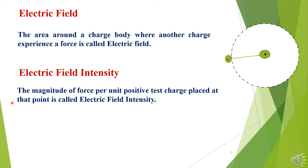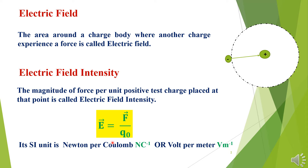Electric field intensity: the magnitude of force per unit positive charge placed at that point is called electric field intensity. For example, a test charge is placed near the field of this positive charge, and this positive charge is applying force on this test charge. The force applied by this positive charge on the test charge gives the electric field intensity. The formula is E = F / Q₀, where F is the force applied and Q₀ is the magnitude of the test charge. The SI unit of electric field intensity is Newton per Coulomb or Volt per meter.